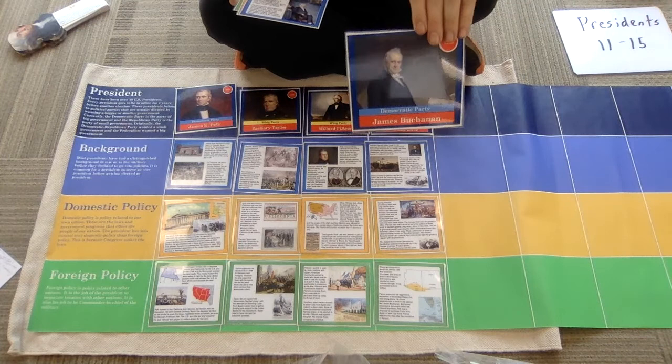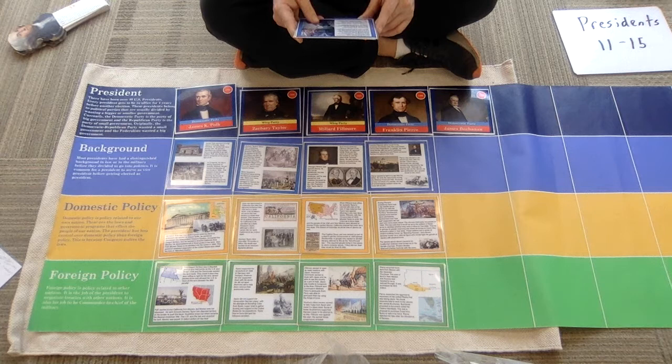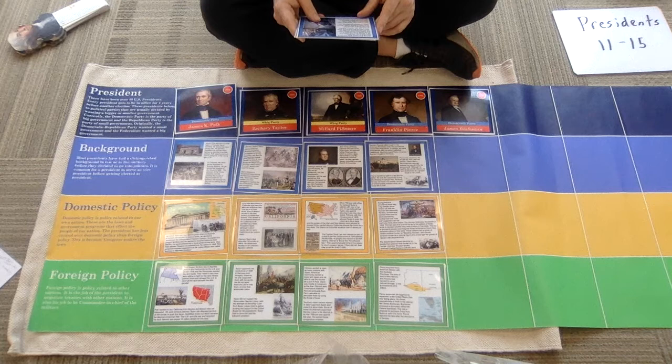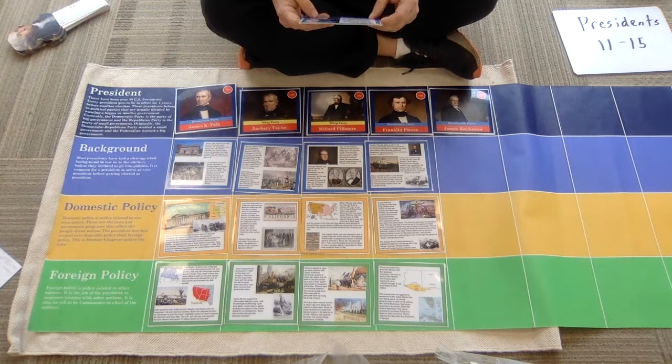Our last president in this set is James Buchanan. He was born in a log cabin in Cove Gap, Pennsylvania. He studied law, was a Federalist until the Federalist Party disbanded, did not support the War of 1812 but chose to help fight once it began. He later became a Democrat and served as Secretary of State under James Polk, helping negotiate the Oregon Treaty with Britain. The Democrats nominated him in 1856 because he was out of the country during the Kansas-Nebraska feud, making him appear impartial.